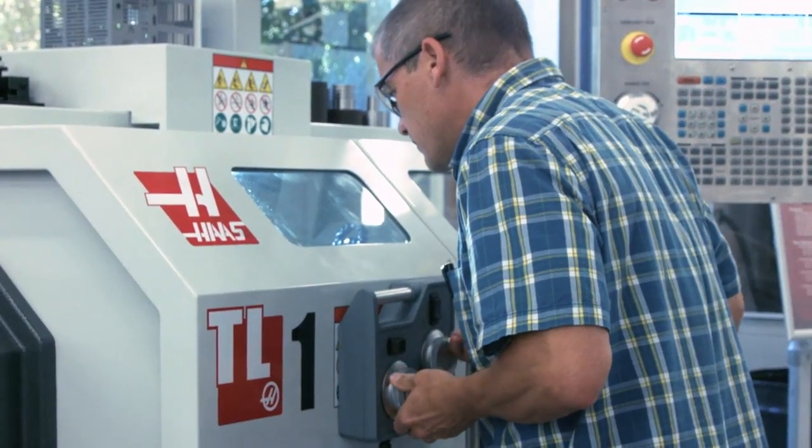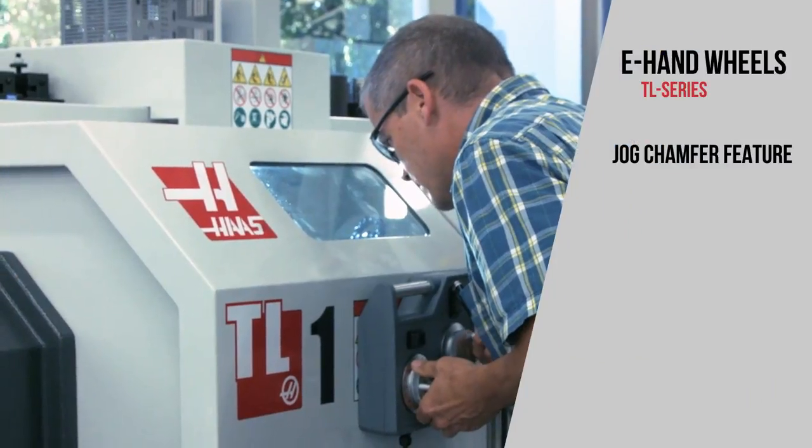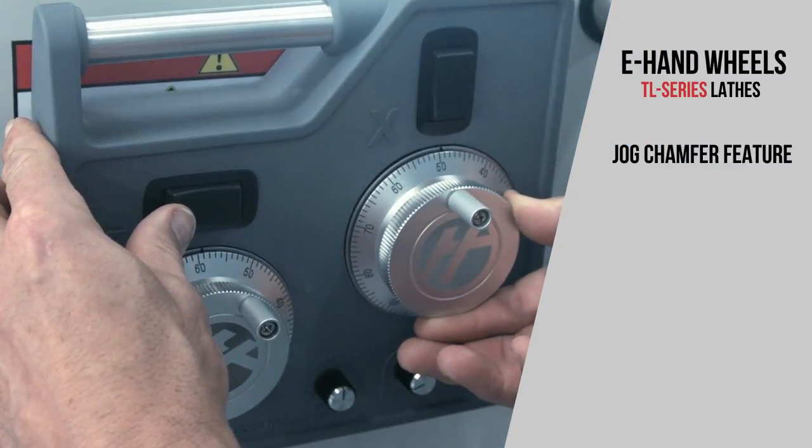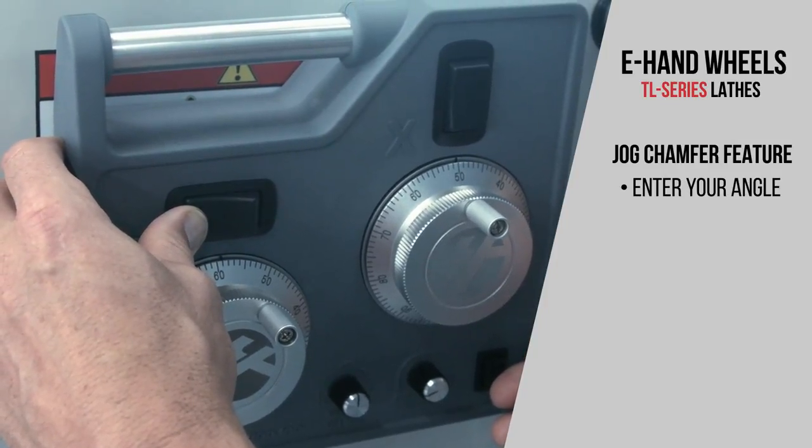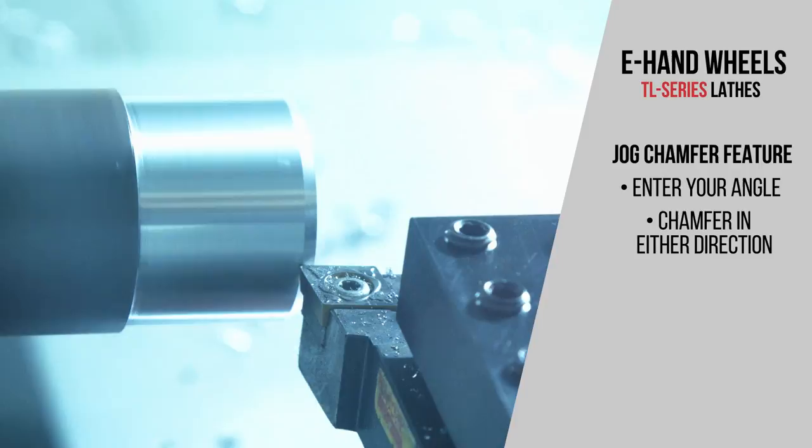Building from there, easily make use of the TL's helpful jog chamfer feature, which functions using the jog buttons on the E-Handwheels unit. Enter the angle you want and chamfer in either direction by pressing the jog button.